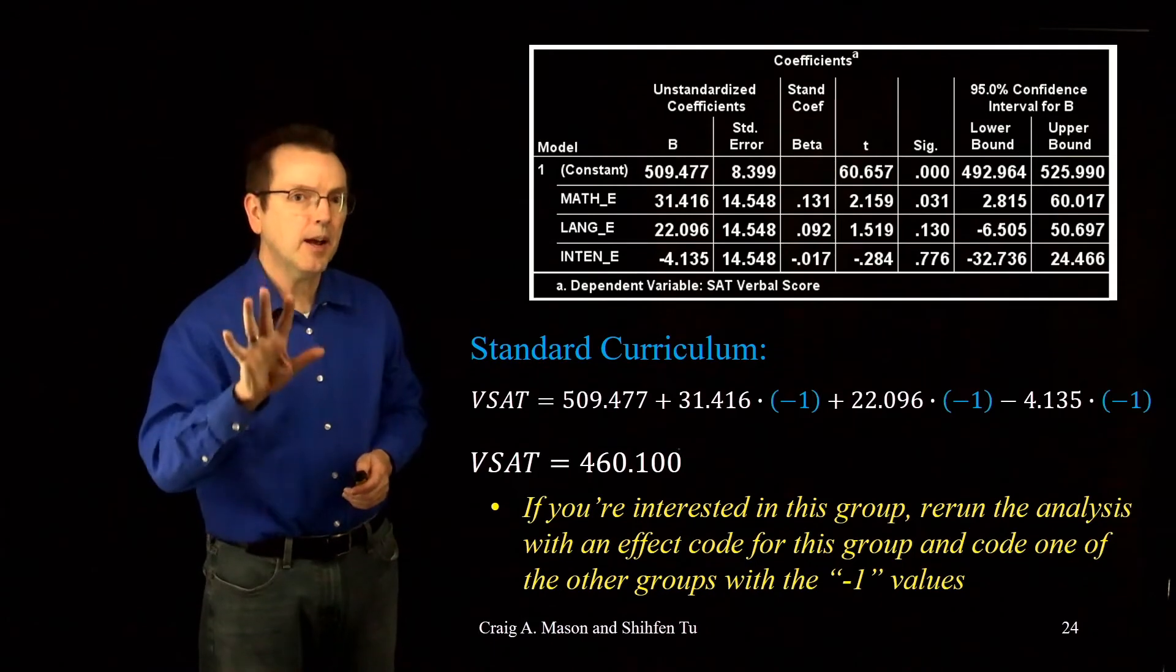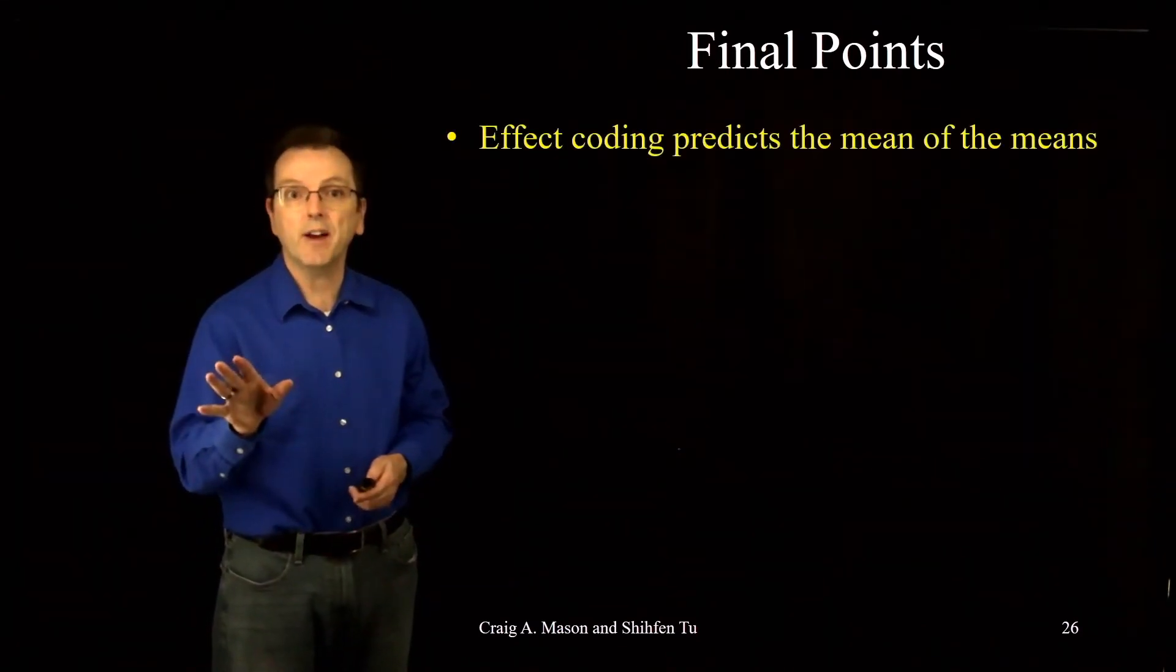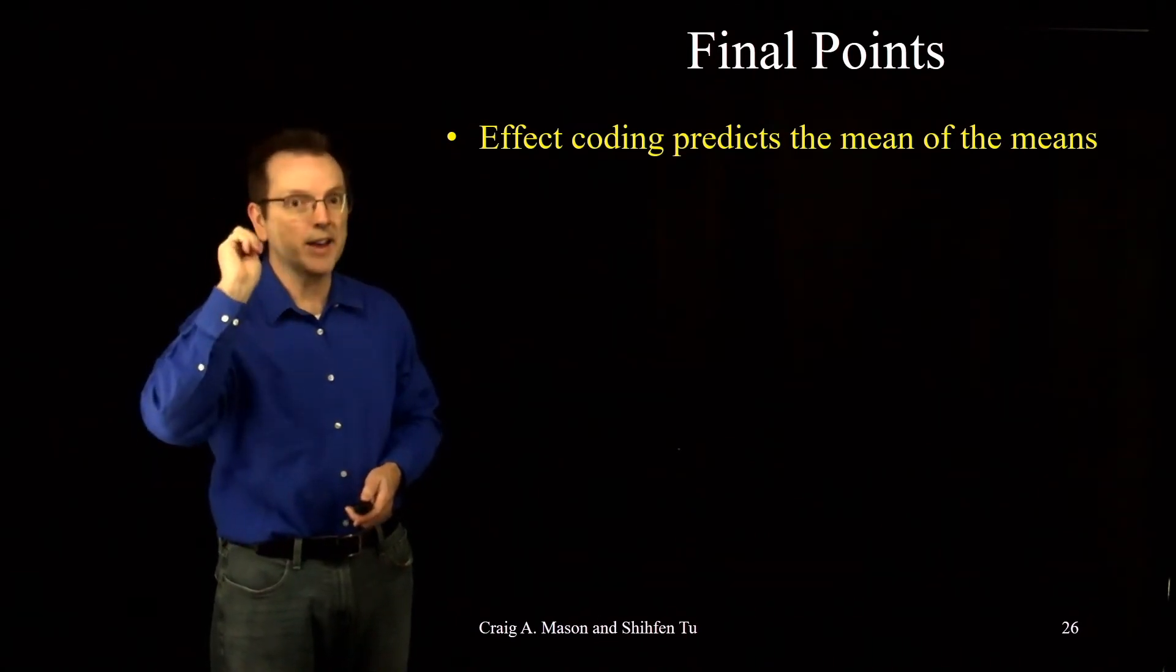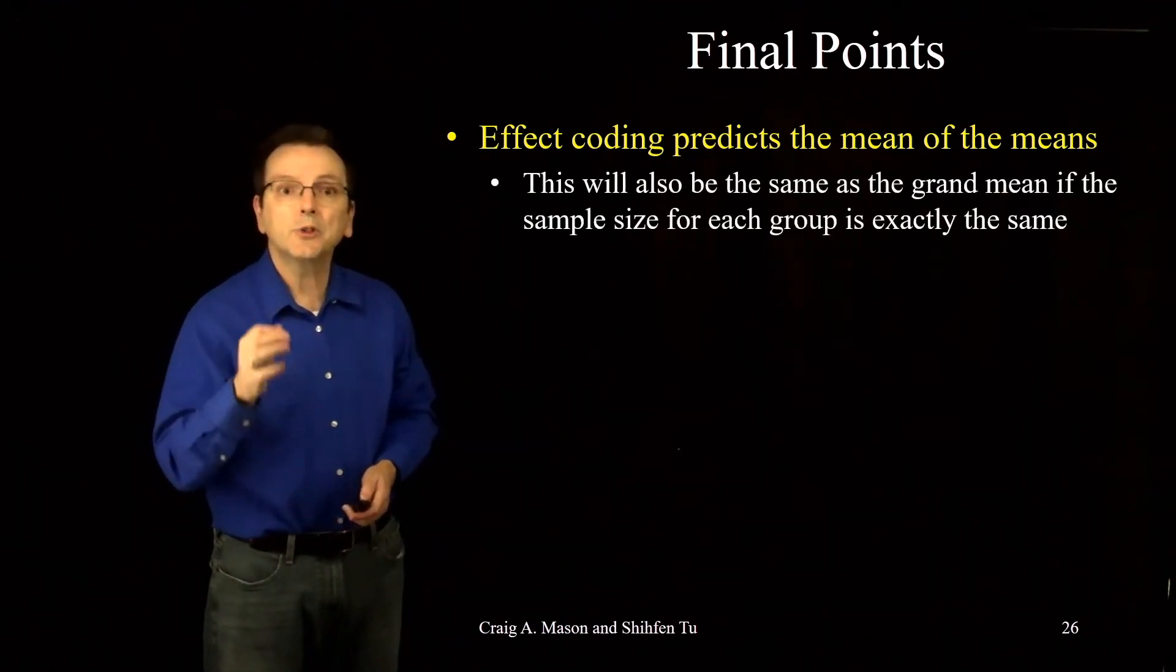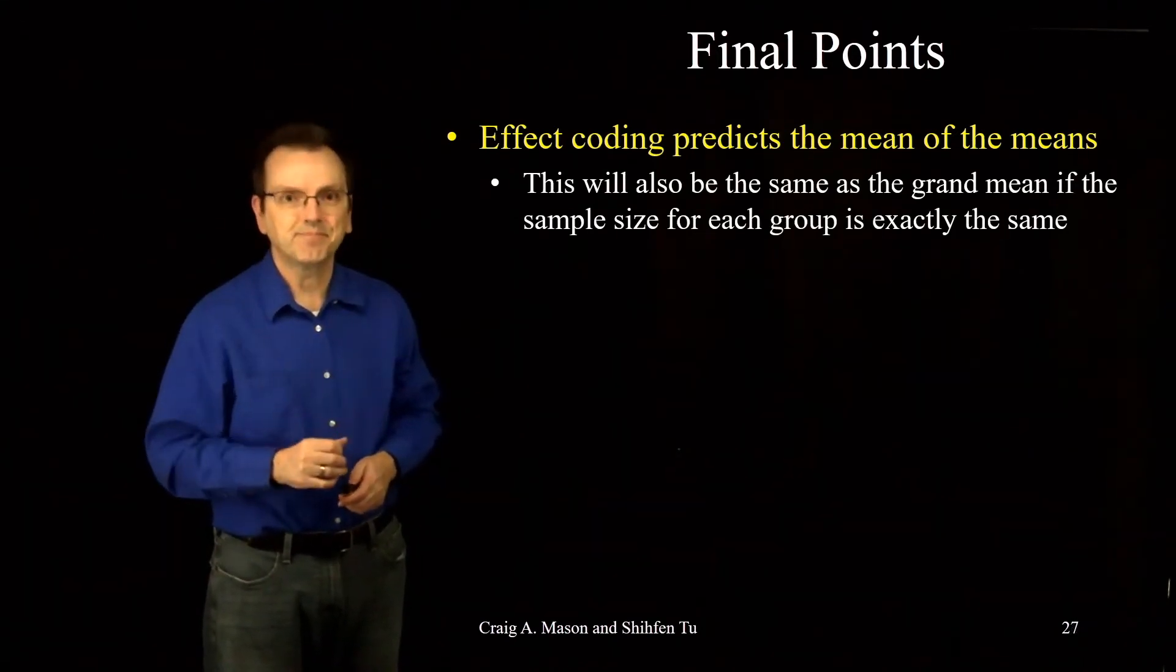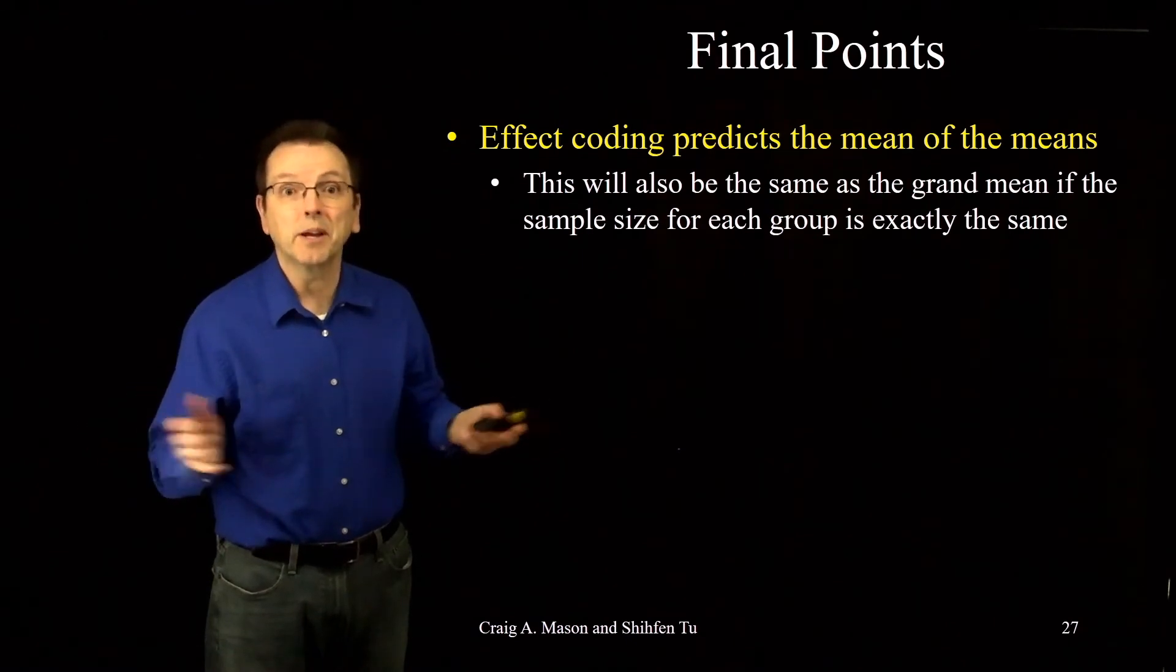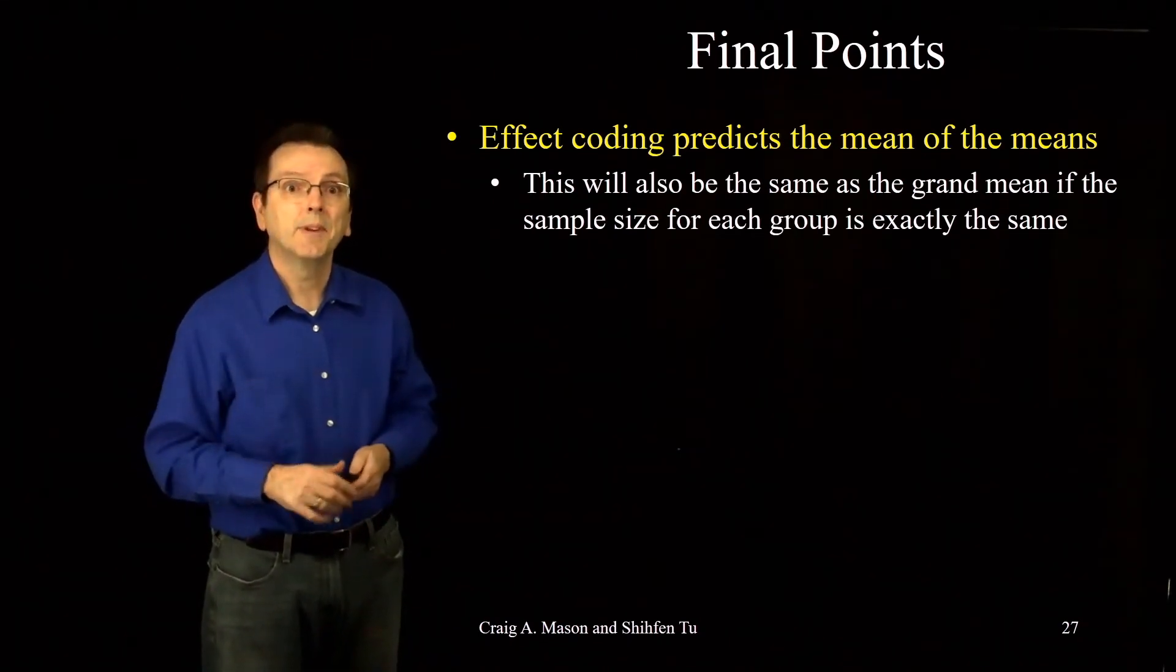Now before wrapping up, a couple of final points. First, notice I've been using the cumbersome language of mean of the means throughout our discussion of effect coding. Effect coding compares different groups to the unweighted mean of the group means. Four groups, you sum up the four means for those four groups and you divide by four, right? But there is a special case where effect coding will also be comparing the different groups to the grand mean. And that's when the sample sizes for each group are exactly the same. Now, there's nothing tricky about that. It's still the mean of the means. It's just that when all the groups are the same size, then the mean of the means is the same value as the grand mean. But I prefer the more cumbersome mean of the means language because that's always true.